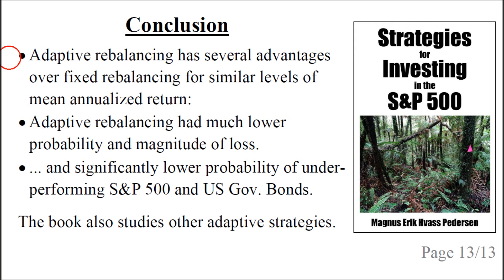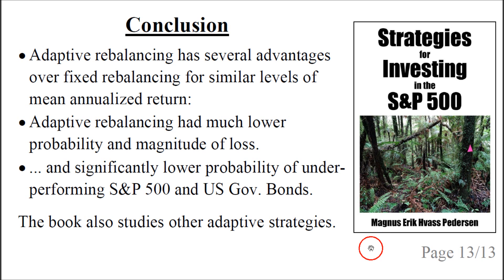A comparison to fixed rebalancing is not shown in these slides — you will have to look in the book for the details. The conclusion is that adaptive rebalancing has several advantages over fixed rebalancing for similar levels of mean annualized return: much lower probability and magnitude of loss, and significantly lower probability of underperforming the S&P 500 and US government bonds. The book also has several other adaptive strategies. You can click on the image or the link below the video.